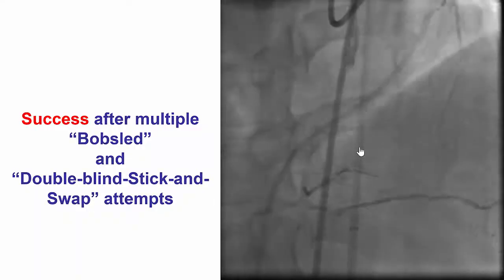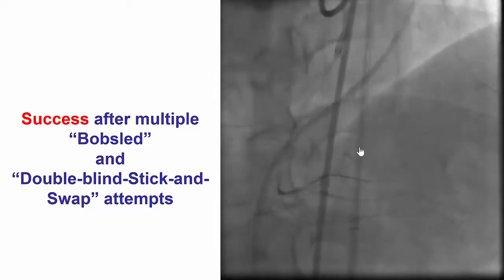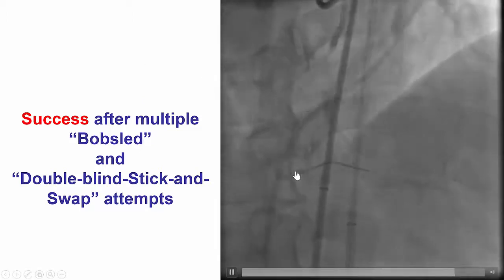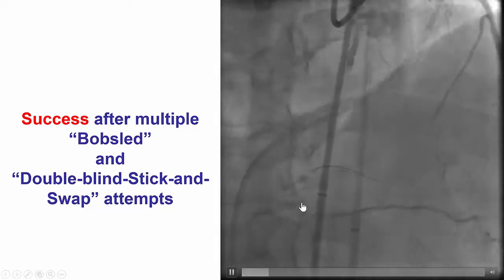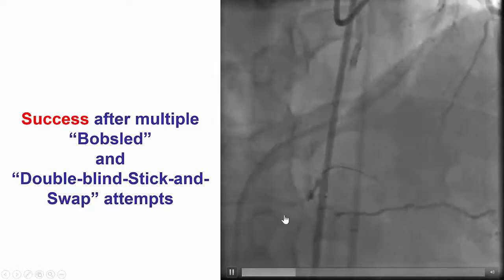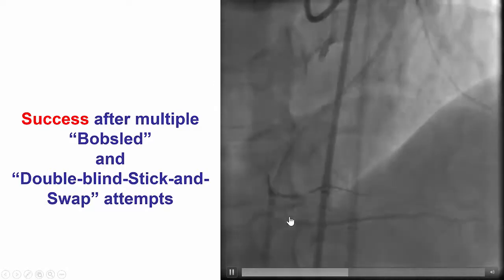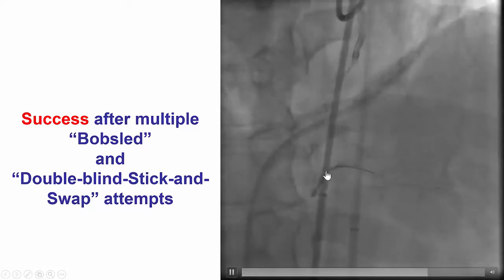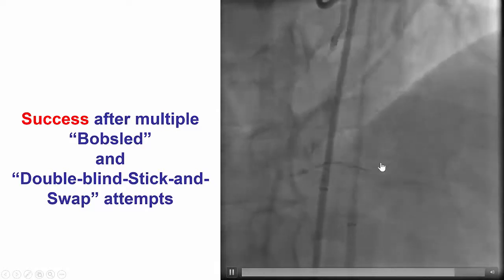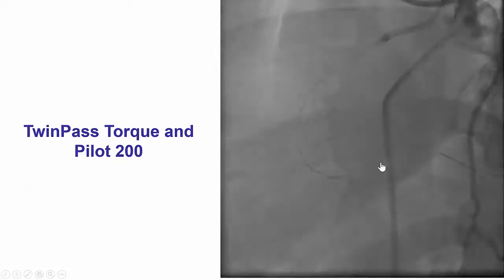It was very challenging to re-enter. However, by moving the re-entry zone — the so-called bobsled technique — and then using the double blind stick and swap, sticking on both sides of the Stingray balloon and then exchanging for the Pilot wire, we were finally able to re-enter into the distal true lumen.